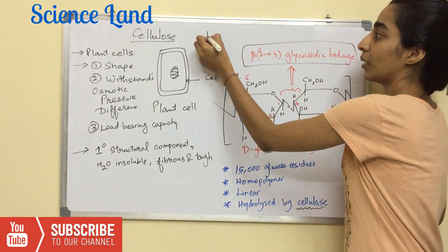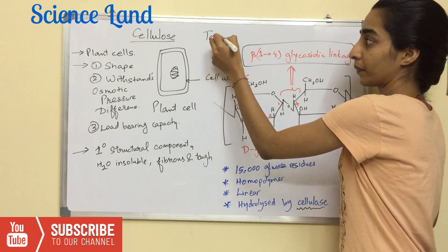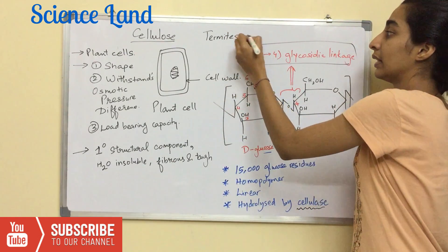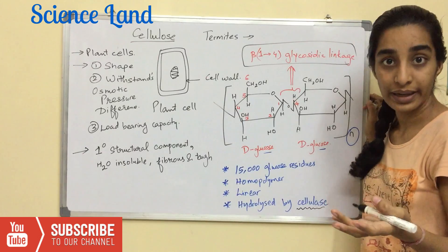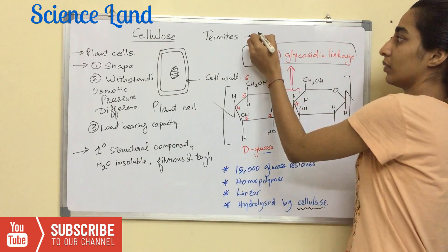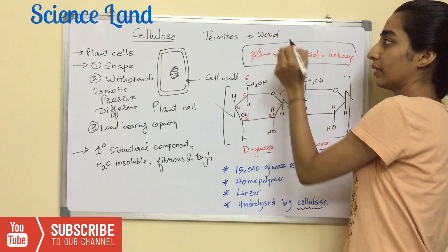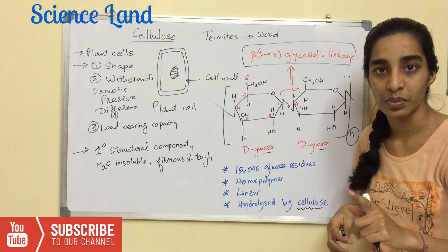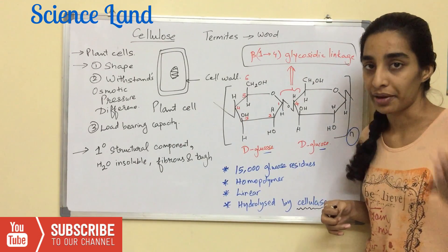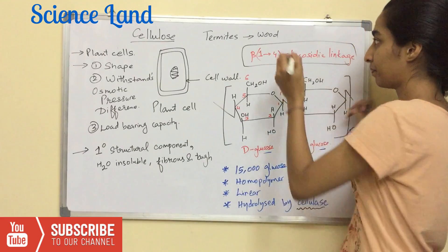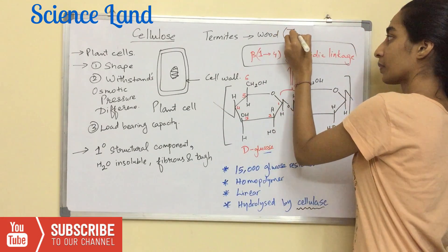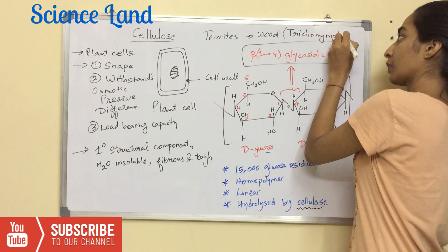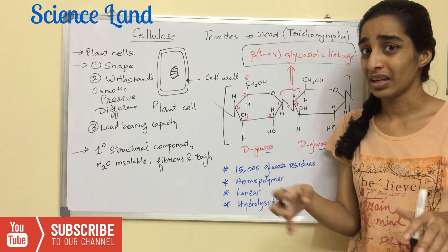I'll give you an example. Termites, also known as white ants, they eat wood. Wood is plant origin. So termites have their food as wood, and that is only possible because they have a symbiotic organism called trichonympha. This organism secretes cellulase.